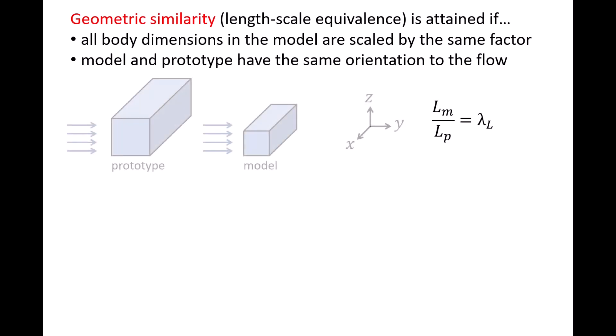Here we have a square column that is being subjected to flow on one side. Geometric similarity is attained if all dimensions of the model are scaled down by the same factor, lambda L, and the model and prototype experience the flow along the same side, which is what we see here.